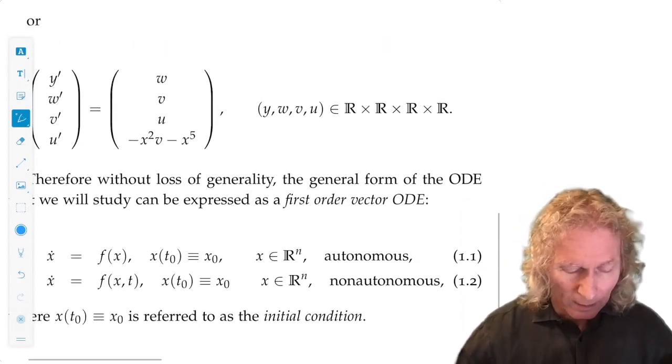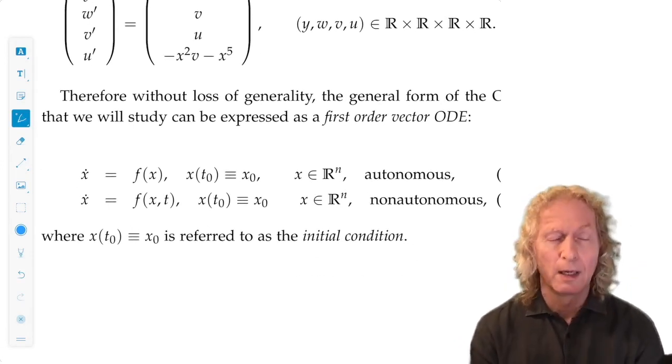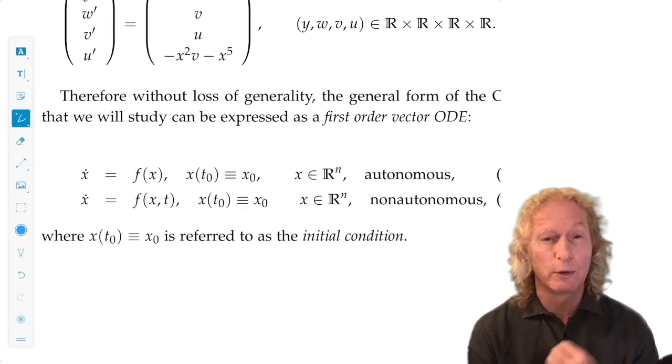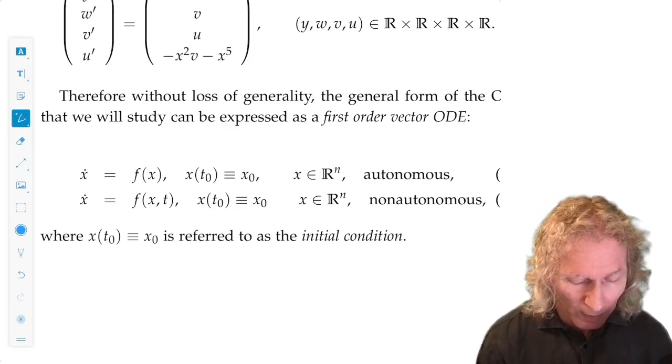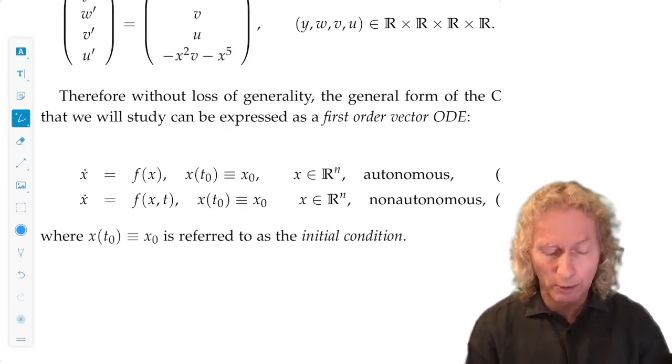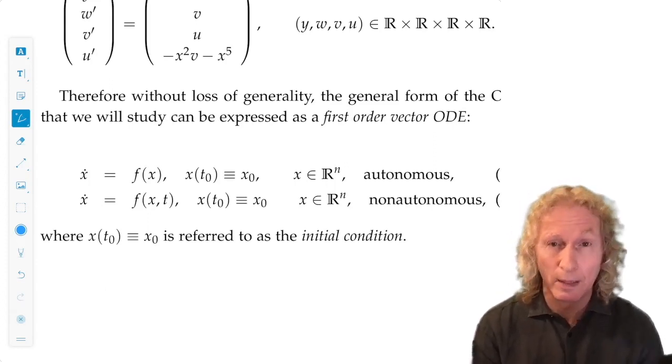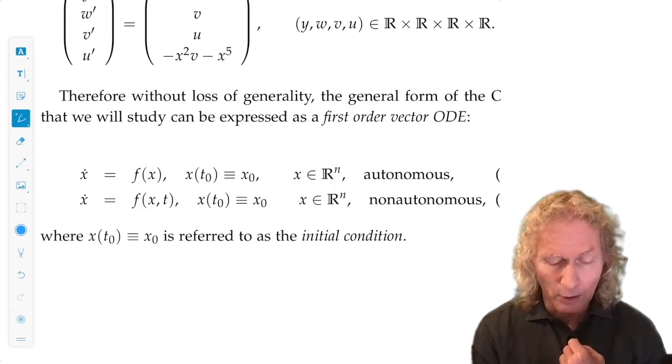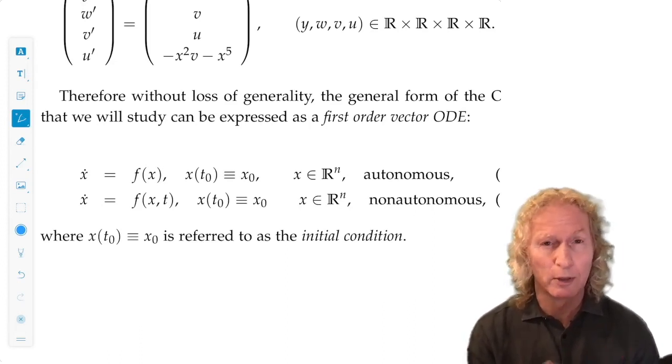The point is, in this formulation, the most general form for an autonomous ODE would be written as x dot equals f of x, where x is in R^n. It may be more general, we'll come to that later, more general n-dimensional manifold. Autonomous is very simple to understand: f of x does not depend upon time.